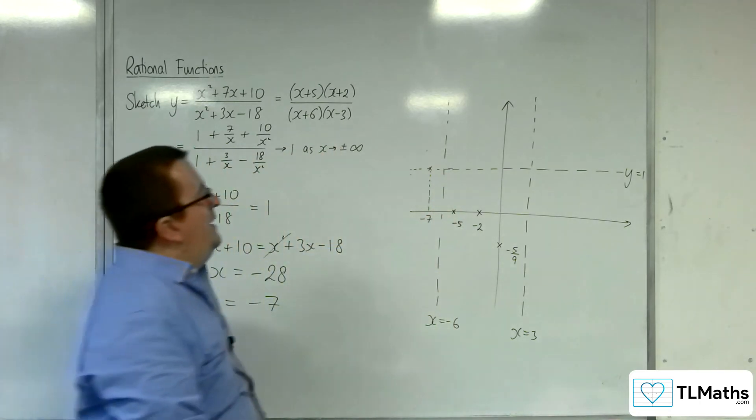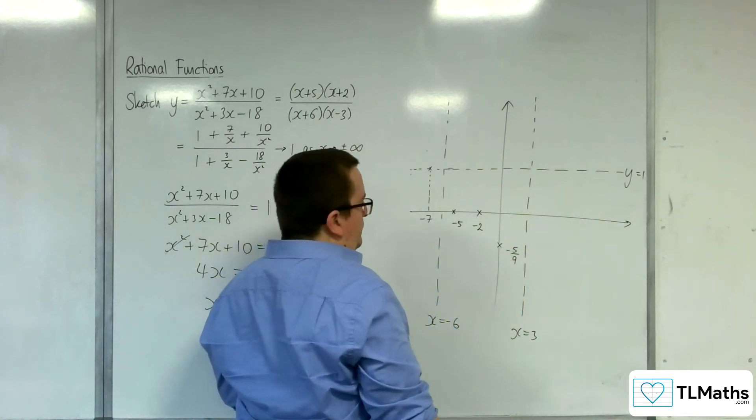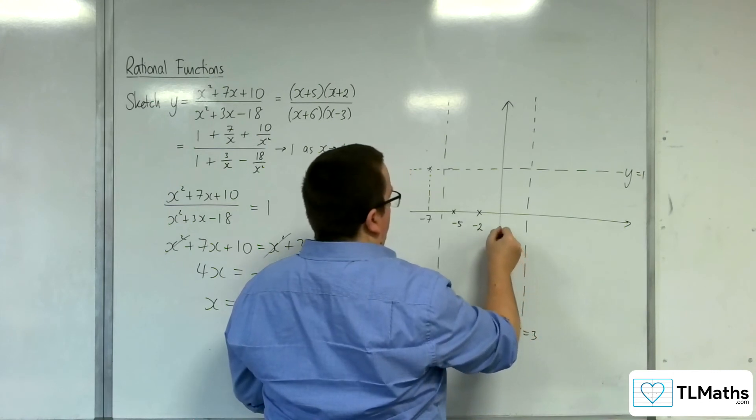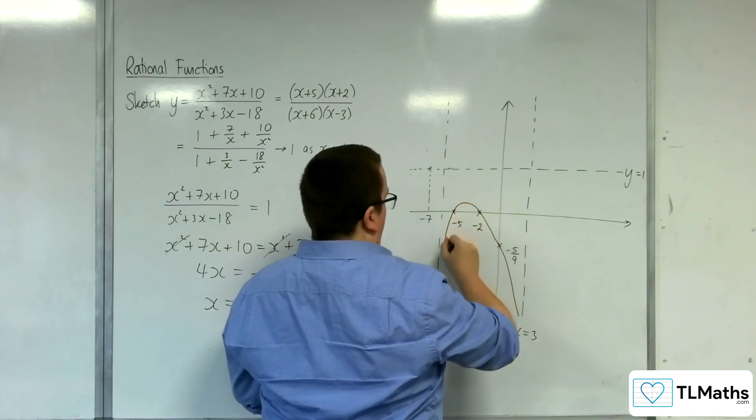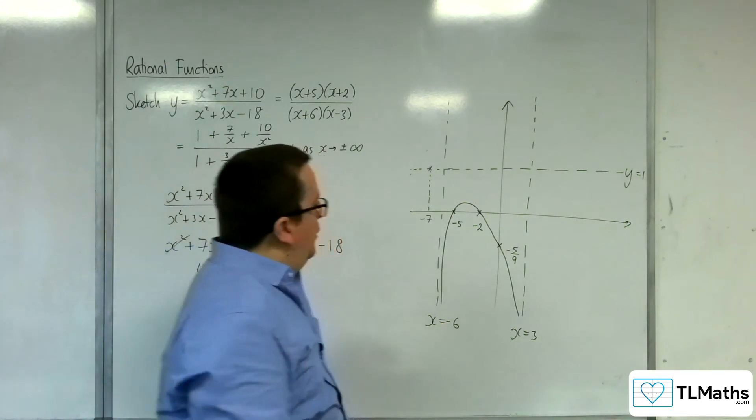Which is somewhere up here. So it's definitely not going high enough to cross through y equals 1. So it's got to do something like that. So something like that. Mine's a bit higgity-piggity, but that'll do.